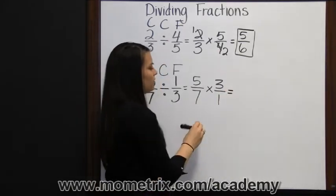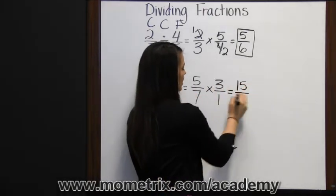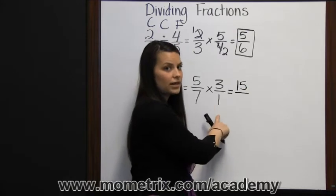So we just multiply across. Five times three is fifteen, and seven times one is seven.